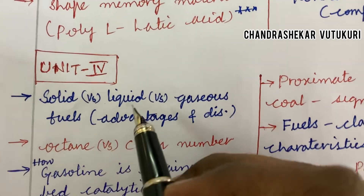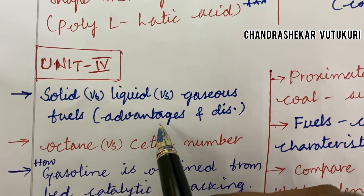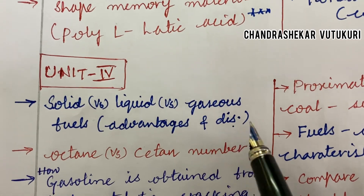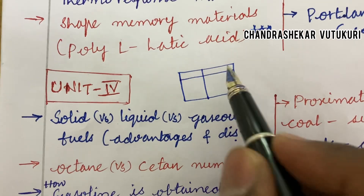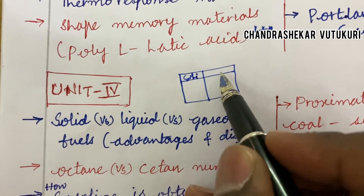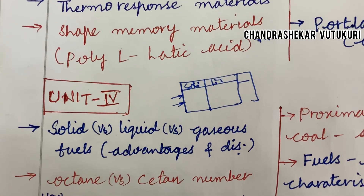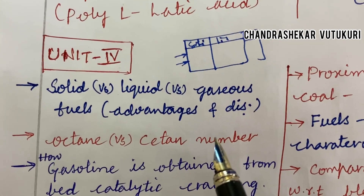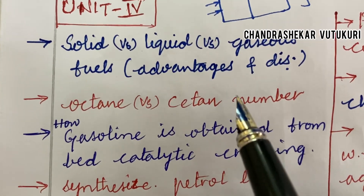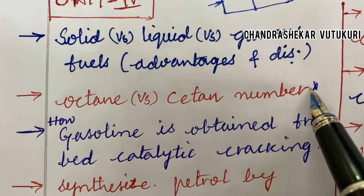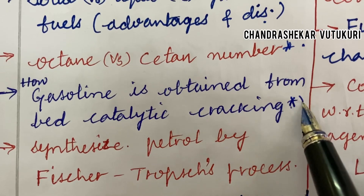Let's jump into Unit 4. It's all about solid versus liquid versus gaseous fuels, their differences, and their advantages and disadvantages. When a comparison question is given, work it out in tabular column form. Write your answers in bullet points — not in paragraphs — for good impression and better marks. Use good quality pens. Octane versus cetane number, their differences, and how gasoline is obtained from fluid catalytic cracking, is said to be a topmost question.